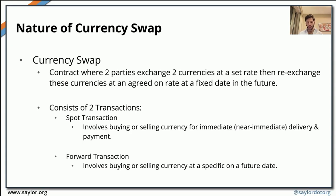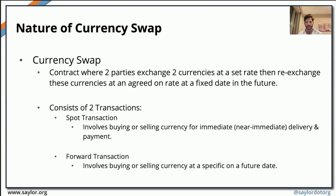Next, we're going to examine the nature of currency swaps. Currency swaps are basically contracts where two different parties exchange two different currencies at a particular rate, and then re-exchange the currencies back again at a different rate that they also agree on, with the re-exchange happening at a fixed date in the future. The currency swap trade is composed of two different transactions: the first transaction is a spot transaction, while the other is a forward transaction. In a spot transaction, there is buying and selling of a particular currency for immediate or near-immediate delivery and payment. In a forward transaction, we are talking about buying and selling of a currency at a specific date in the future.